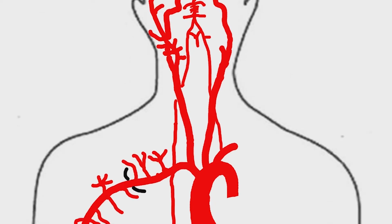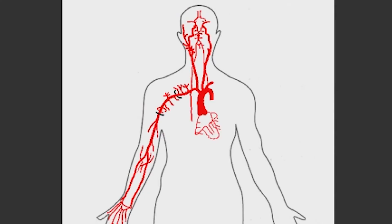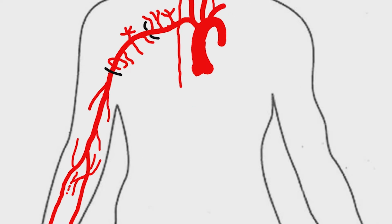Let's see the branches of the descending thoracic aorta. The coronary arteries are temporarily hidden to visualize the descending thoracic aorta. The descending aorta starts at the level of the 4th thoracic vertebral body as the continuation of the aortic arch. It exits the thorax by continuing as the abdominal aorta as it crosses the aortic hiatus in the diaphragm.